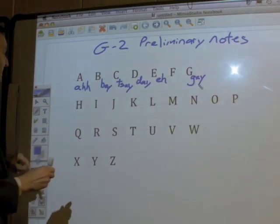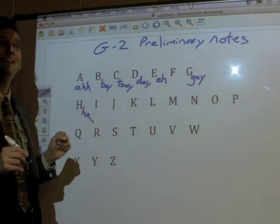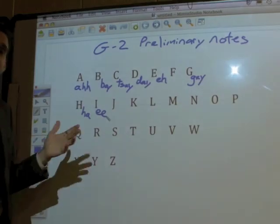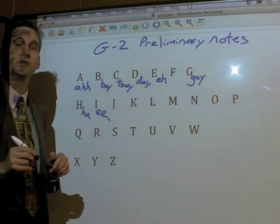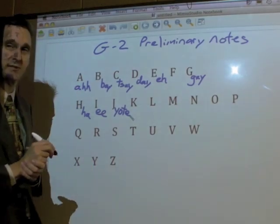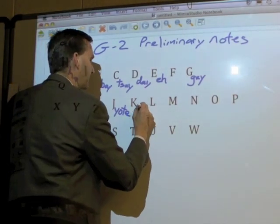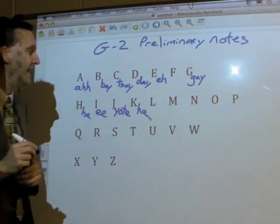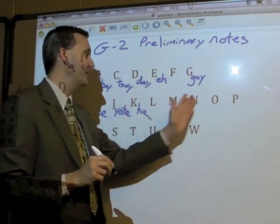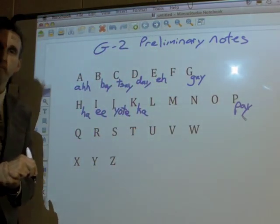H is pronounced 'ha' — it's like laughter, 'ha'. This one confuses a lot of people — this is 'ee', not 'I' but 'ee', so I'm going to put two E's here. This one is pronounced 'yote' — Y-O-T-E, 'yote'. This one here is 'ka', 'ka' sound. Now L, M, N, and O are the same sound in both languages. And this last one is 'pay', like you need to pay me.